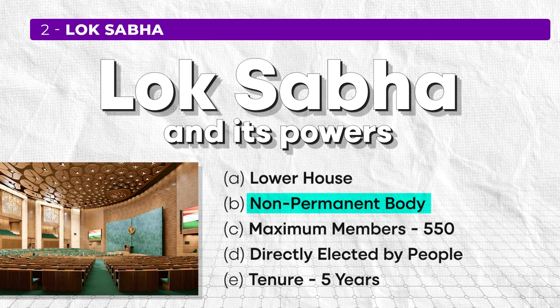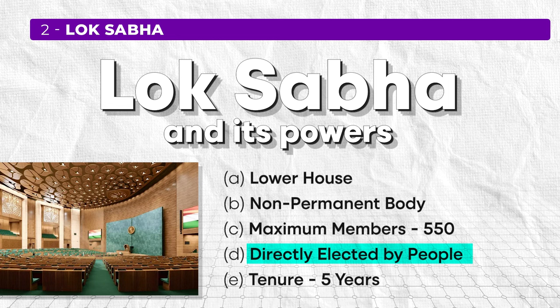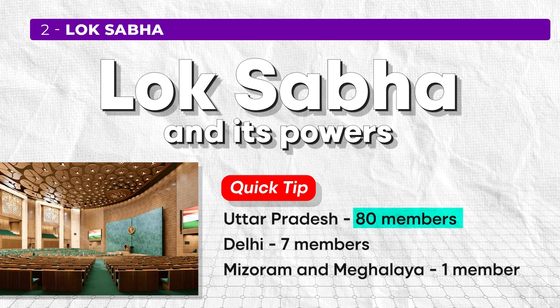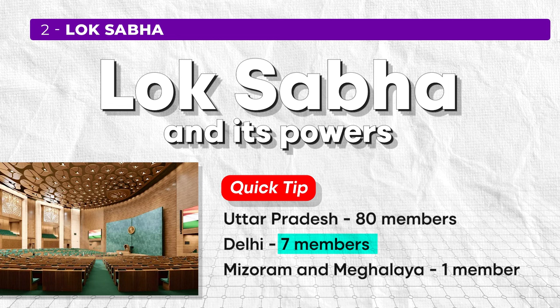The Lok Sabha can be dissolved anytime. The maximum number of members is 550 — compared to 250 in the Rajya Sabha. The members of the Lok Sabha are directly elected by the people, and that's why it is called the lower house of the parliament, and this is how democracy functions. The tenure of each member is 5 years, unlike 6 years in the Rajya Sabha. The seats of the Lok Sabha in each state depends upon the size of the state — for example, Uttar Pradesh, being the biggest state in India, has the most Lok Sabha members.